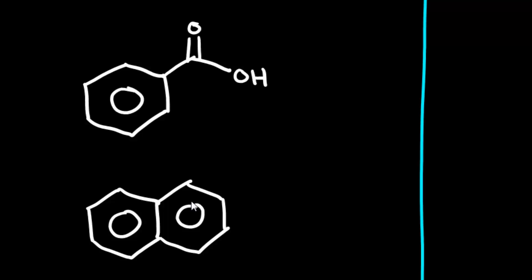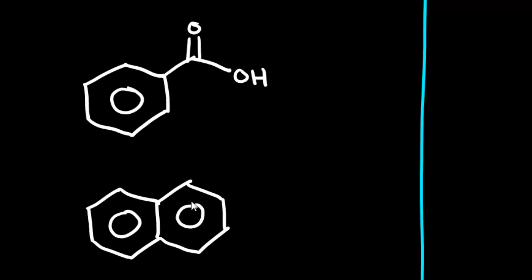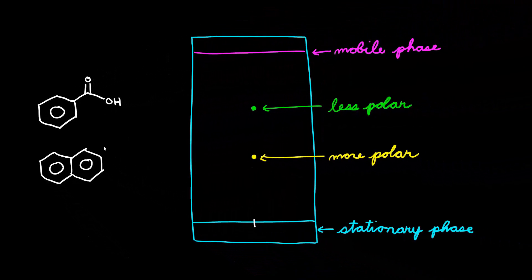And as we said earlier, less polar compounds are more attracted to the mobile phase. So, we would determine that this represents the green dot.